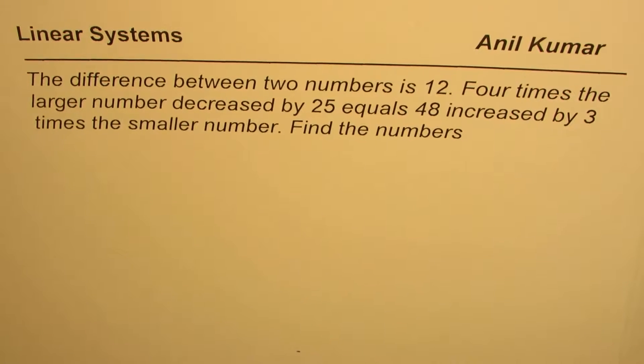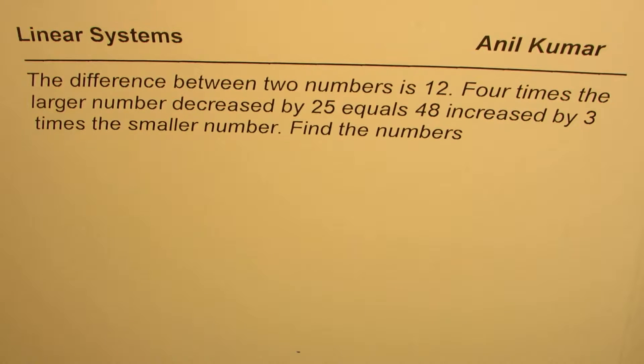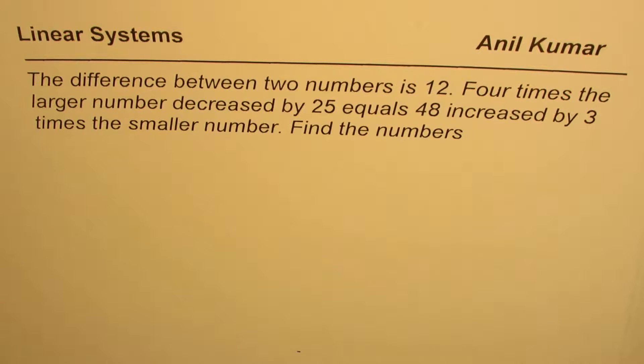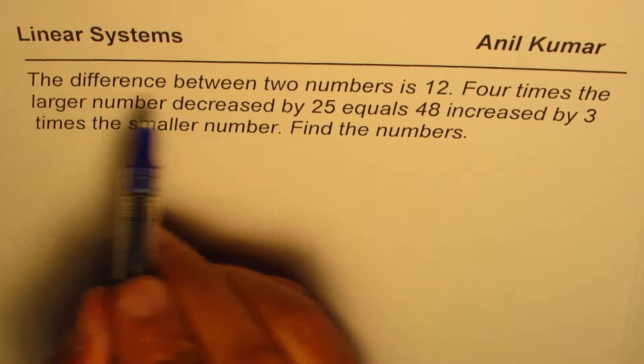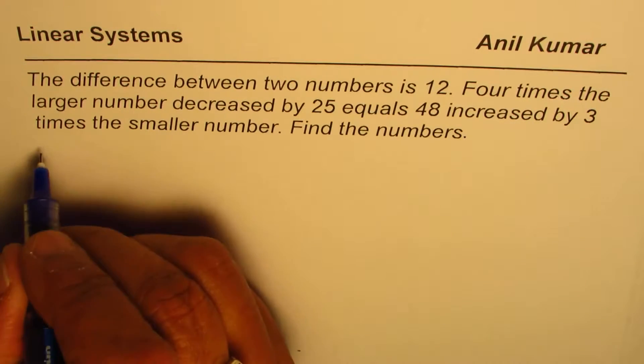I'm Anil Kumar, we are solving linear systems and here is an application question for you. The difference between two numbers is 12. Four times the larger number decreased by 25 equals 48 increased by three times the smaller number. Find the numbers.